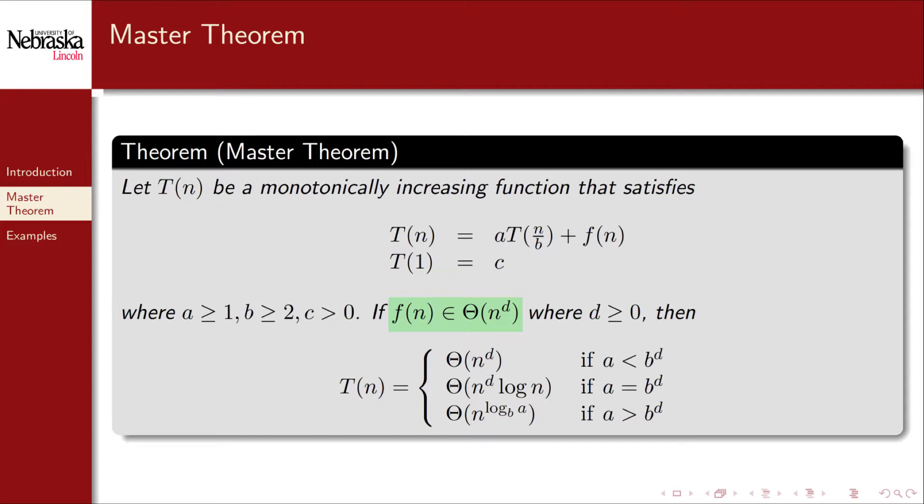If we can bound f of n by some polynomial, say theta n to the d, then based on the values a, b, and d, we can conclude that T sub n has one of the three following asymptotic characterizations.